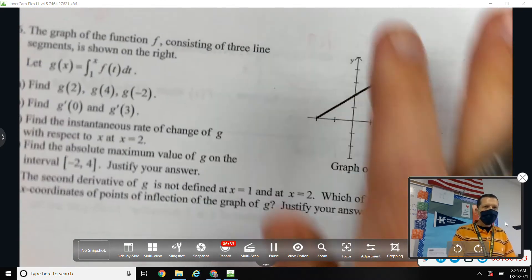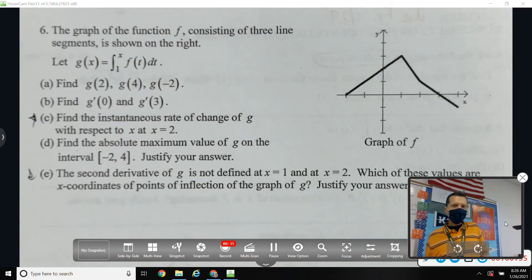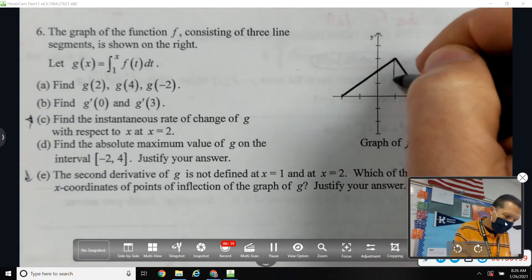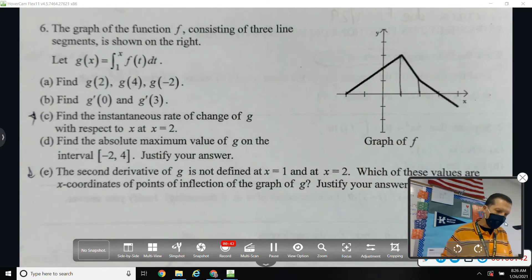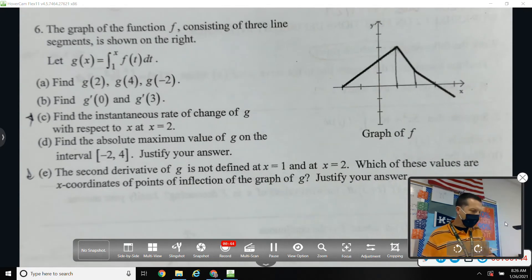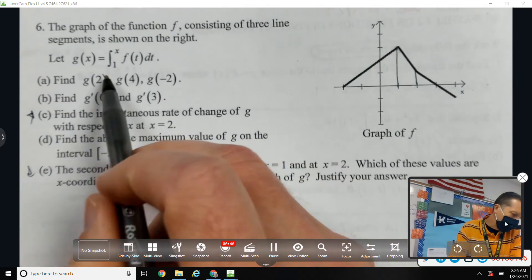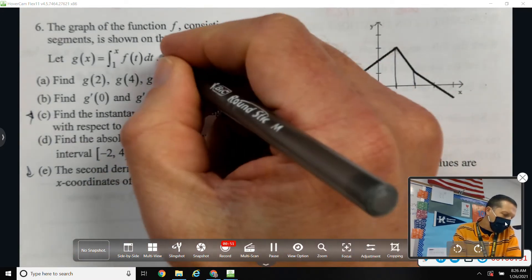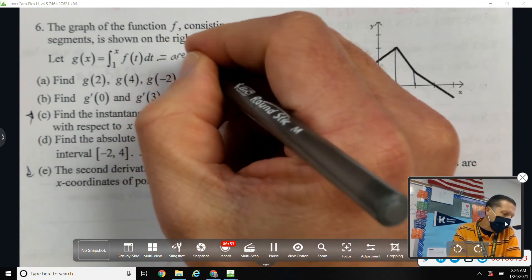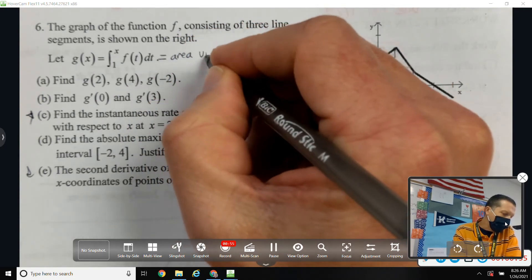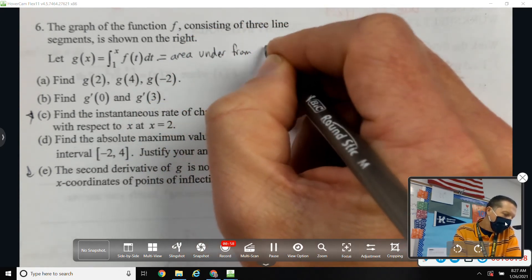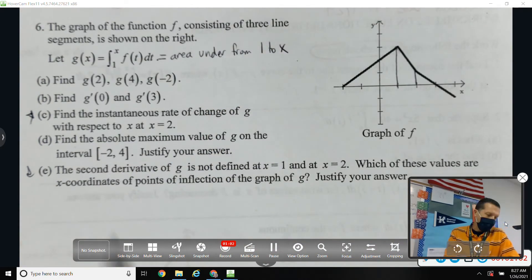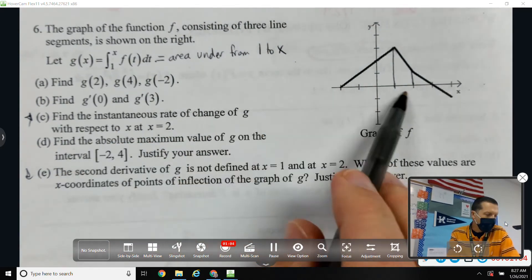So looking at number six, the graph of the function consisting of three line segments is shown on the right. So I'm already thinking this is an area problem, most likely. Let g of x be the integral from 1 to x of f of t dt. So that means the area under f from 1 to x.